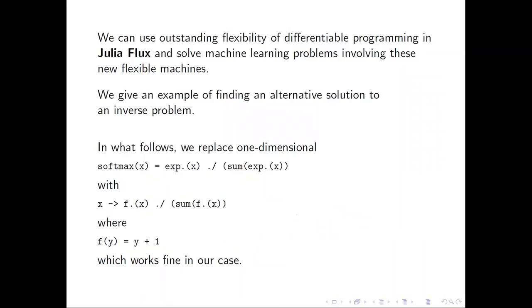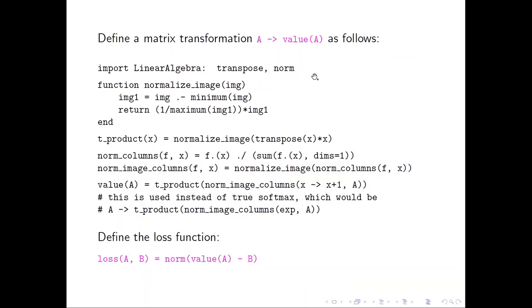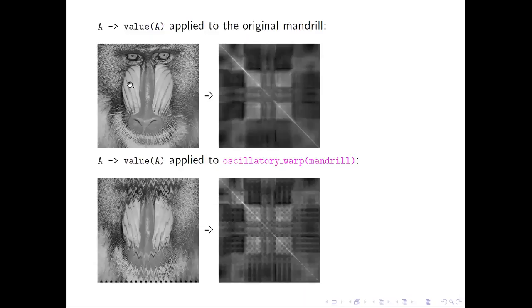Let's try machine learning using great facilities afforded by Julia Flux. Let's define a matrix transformation and the loss function associated with it. So the top row you have seen already and now let's warp the monkey and then the result will acquire some grains.